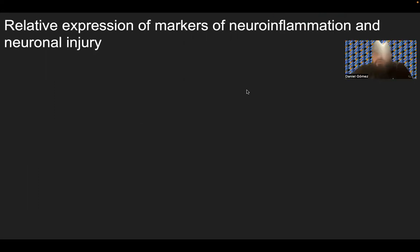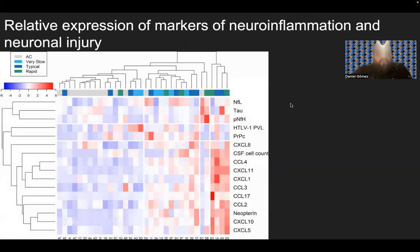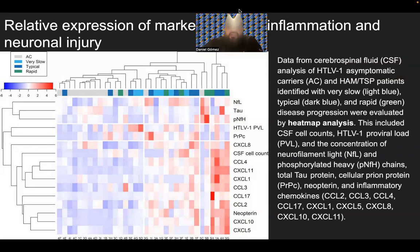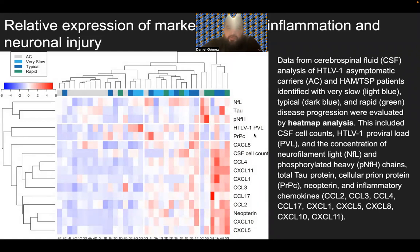The relative expression of markers of neuroinflammation and neuronal injury is shown via heat map analysis of CSF data from HTLV-1 asymptomatic carriers and HAM-TSP patients categorized by progression speed — very slow (light blue), typical (dark blue), and rapid (green). This included CSF cell counts, HTLV-1 proviral load, NF-L, phosphorylated neurofilament heavy chain, total tau protein, cellular prion protein, neopterin, and inflammatory cytokines CCL2, 3, 4, 17, CXCL1, 5, 8, 10, and 11.